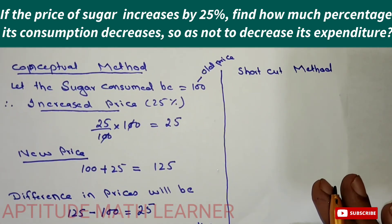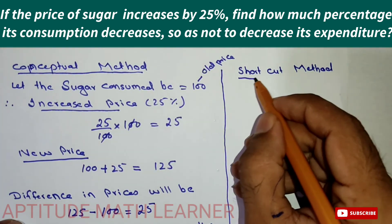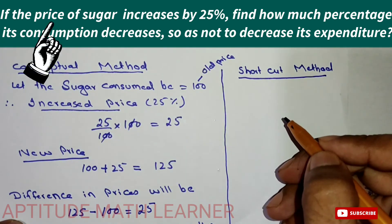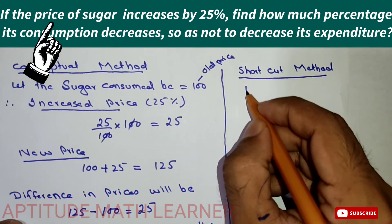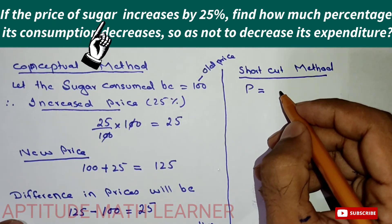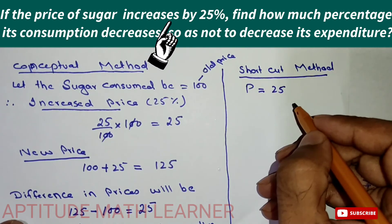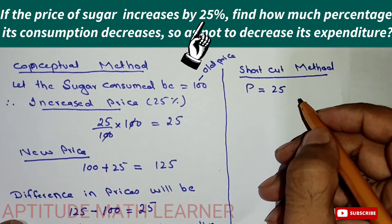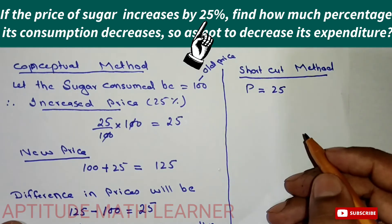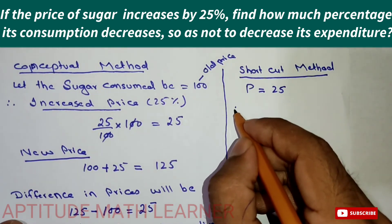Now for those who want the shortcut method to solve this quickly: we take p as the percentage price increase, so p equals 25 percent. We need to find the reduction in consumption of sugar.